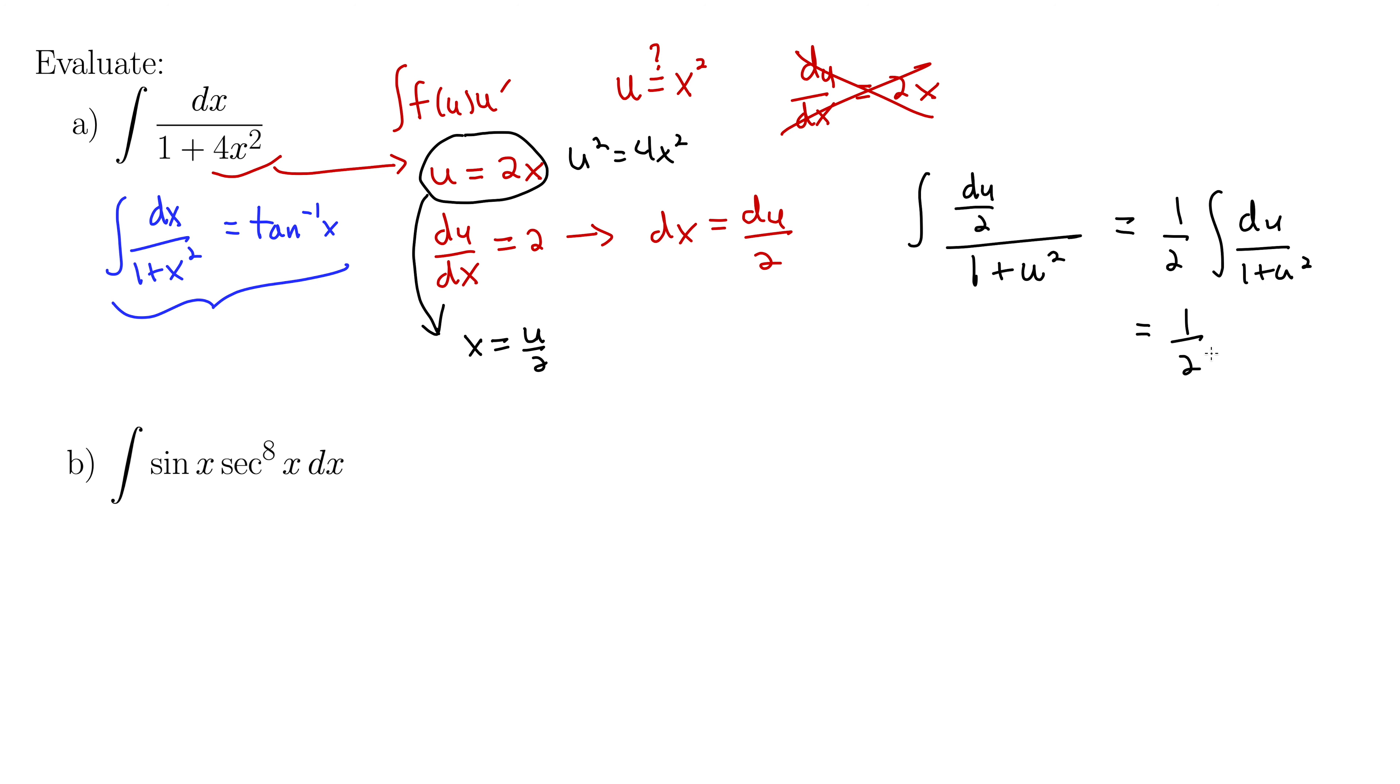Which we know this is 1 half arctan u plus c. And finally, back substitute, it's getting pretty involved here, but remember our original u is 2x. So we plug that back in for u, so we get a final answer of 1 half arctan of 2x plus c.